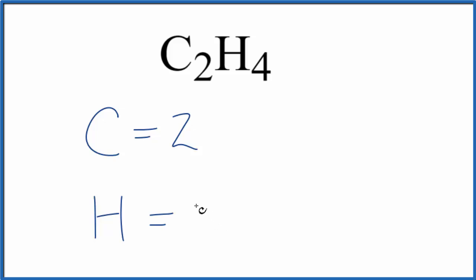For the hydrogen, we have 4. So we have a total of 4 plus 2, 6 atoms in C2H4.